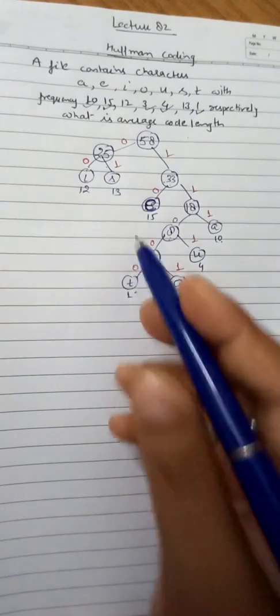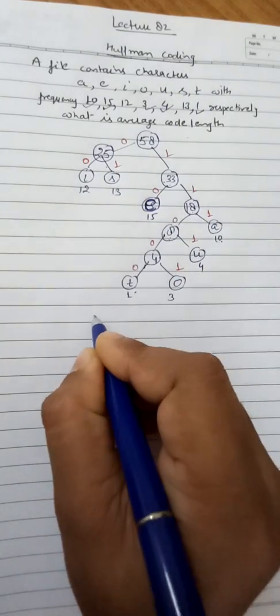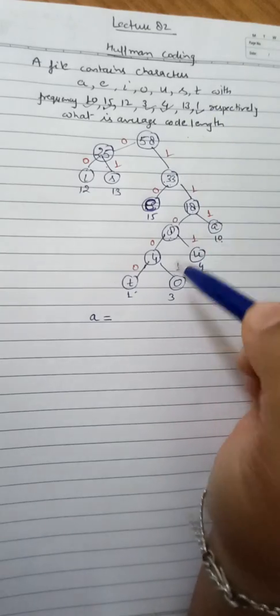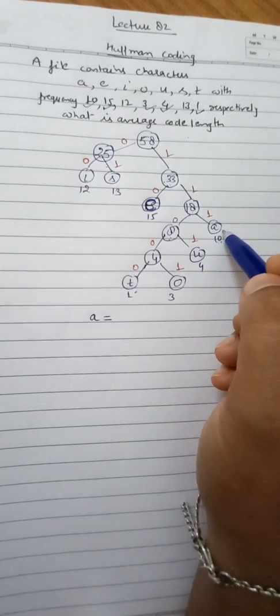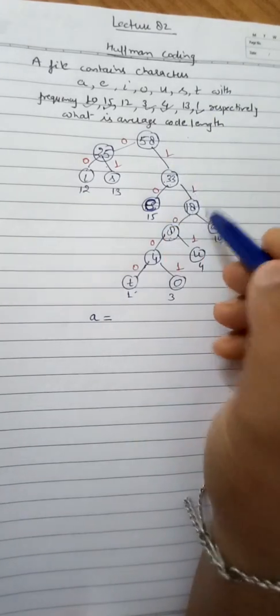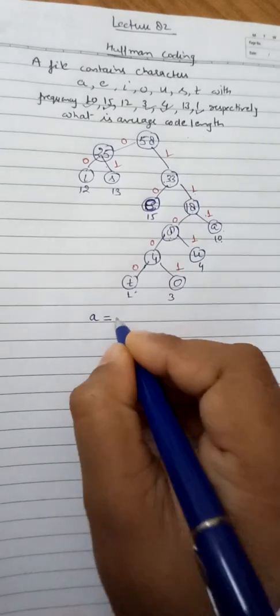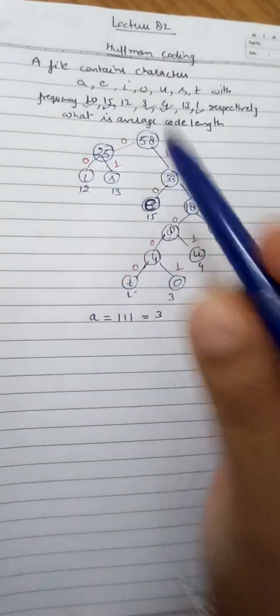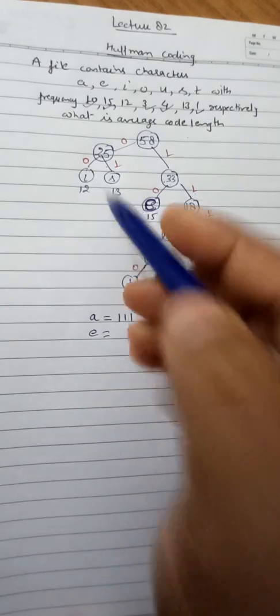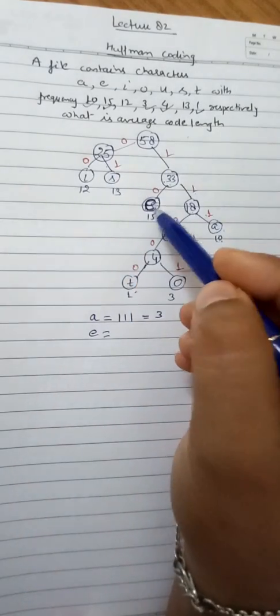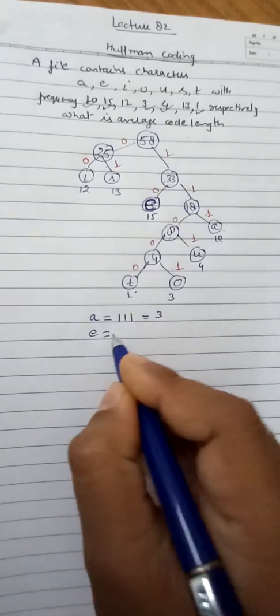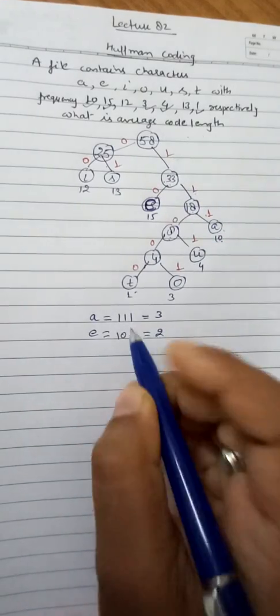Now we trace the bit codes for each character. For a, tracing the path gives us 3 bits: 1, 1, 1. For e, tracing the path gives 2 bits: 1, 0. So the number of bits for a is 3 and for e is 2.